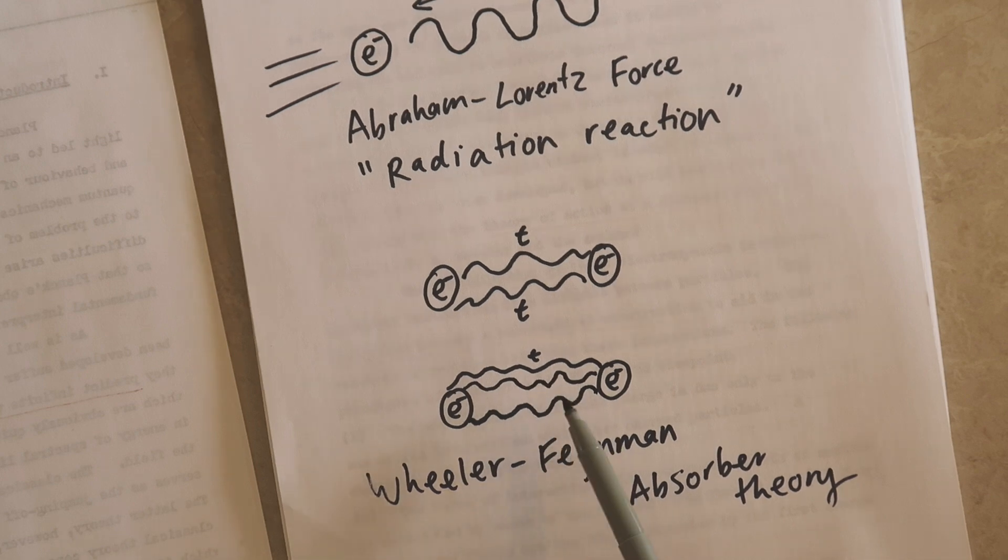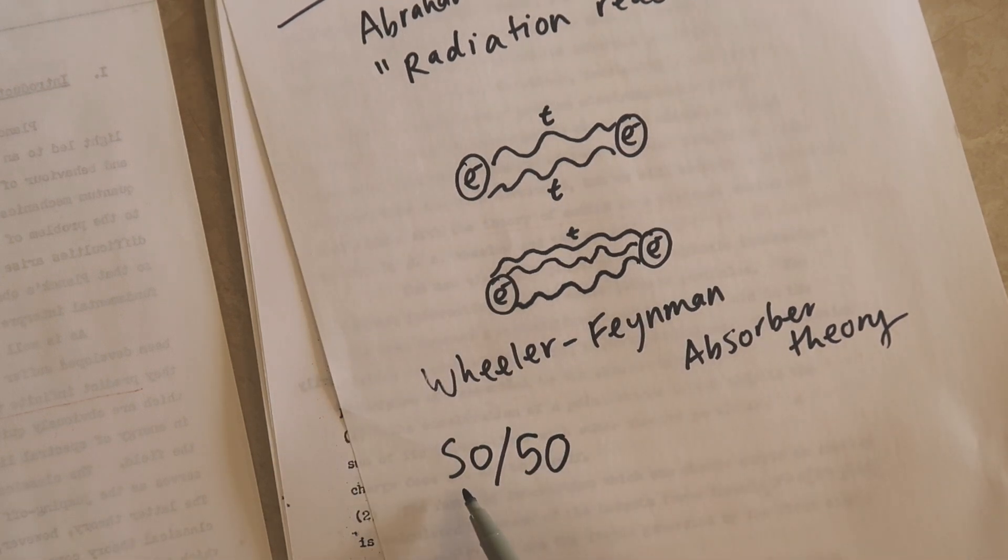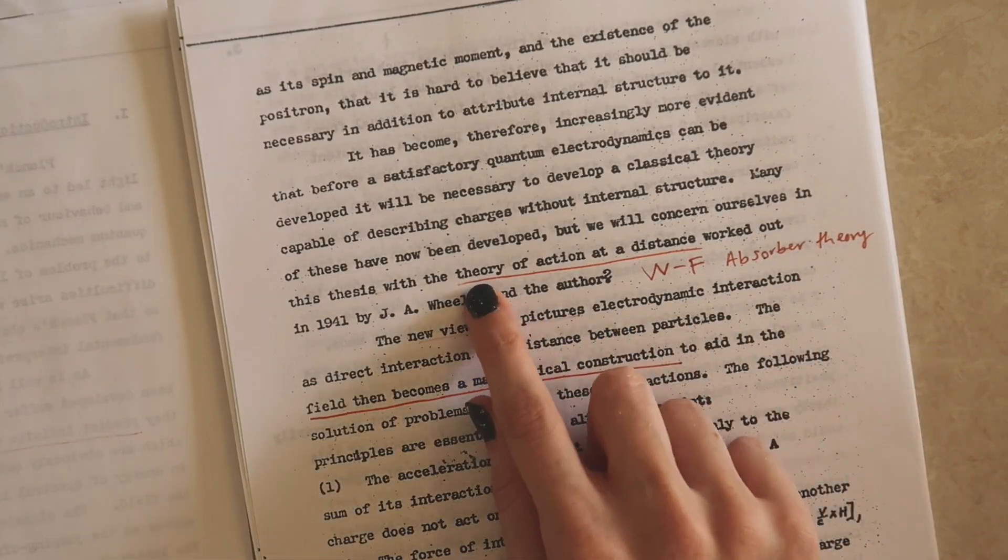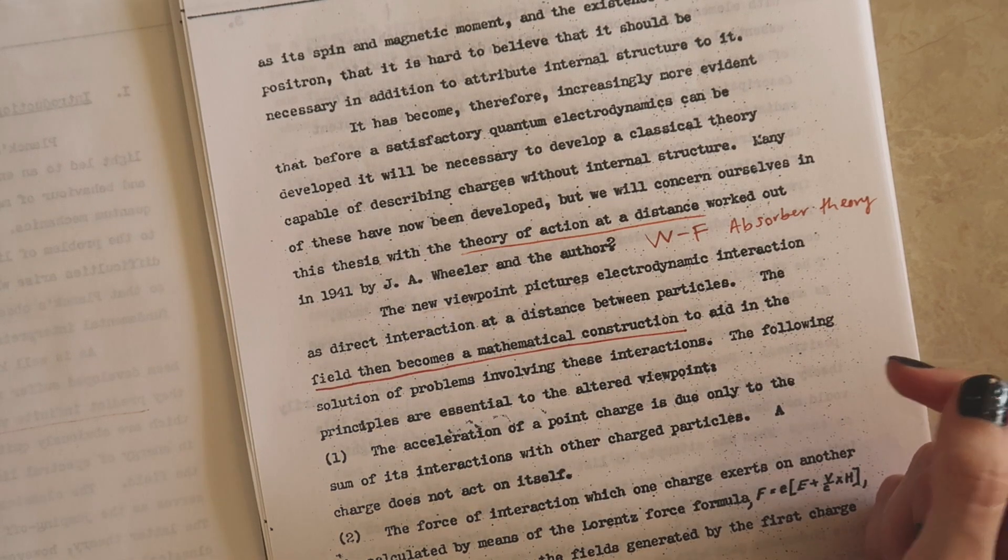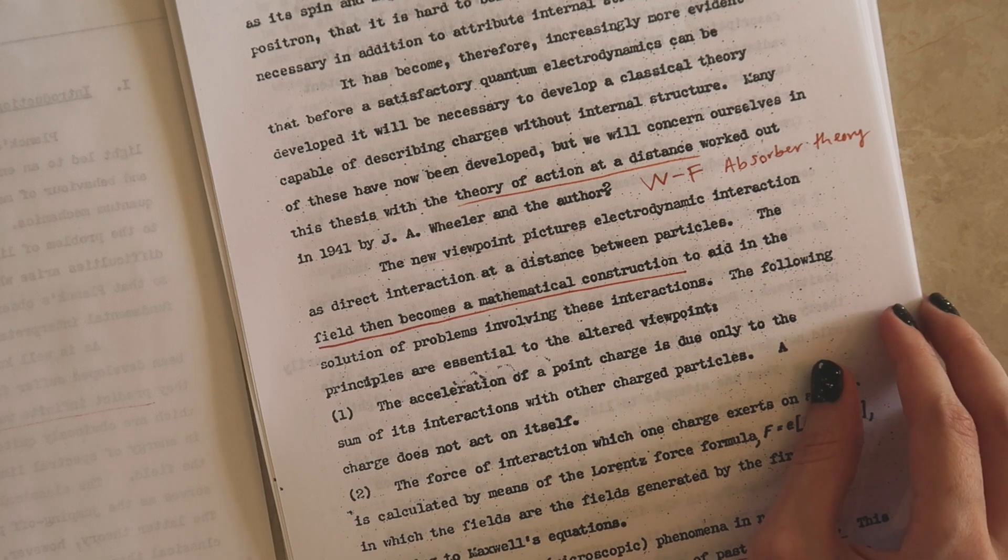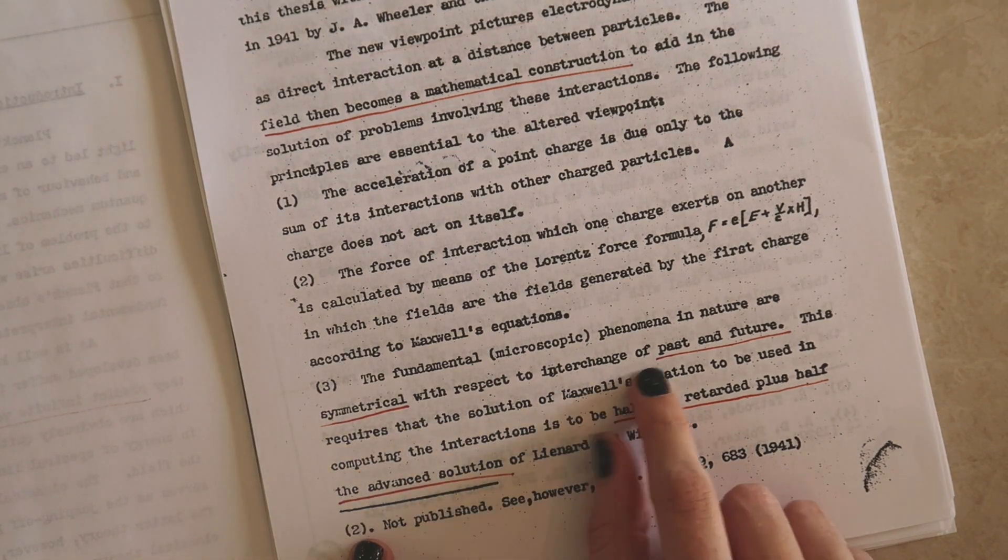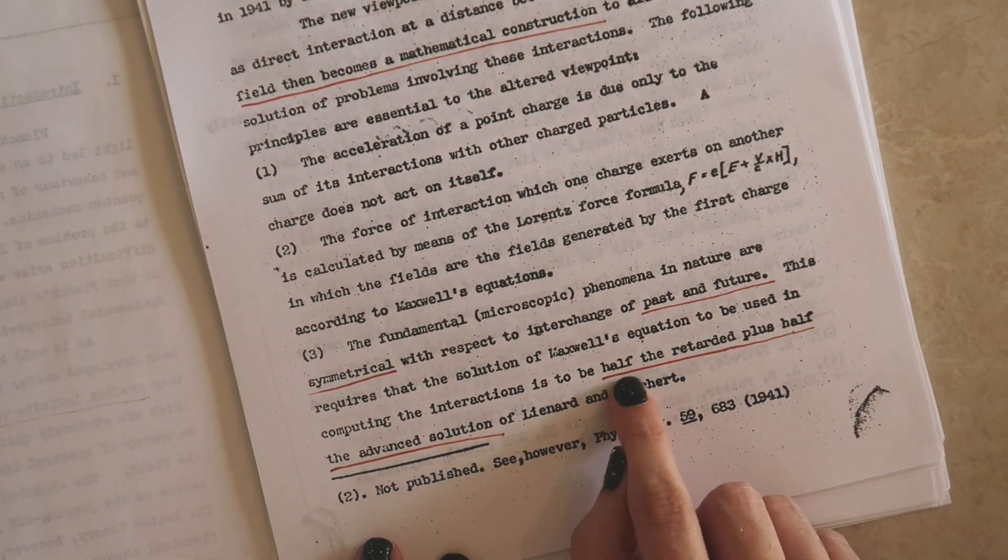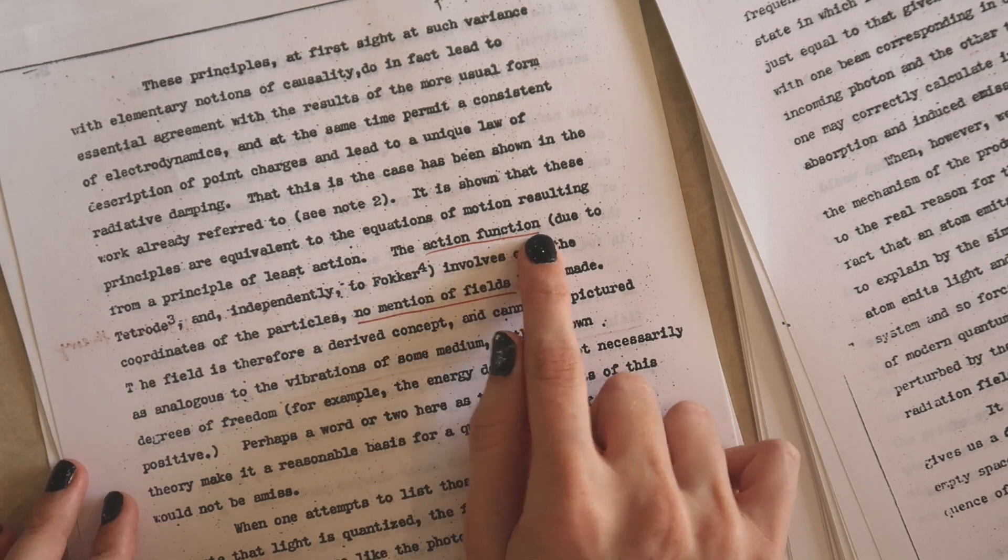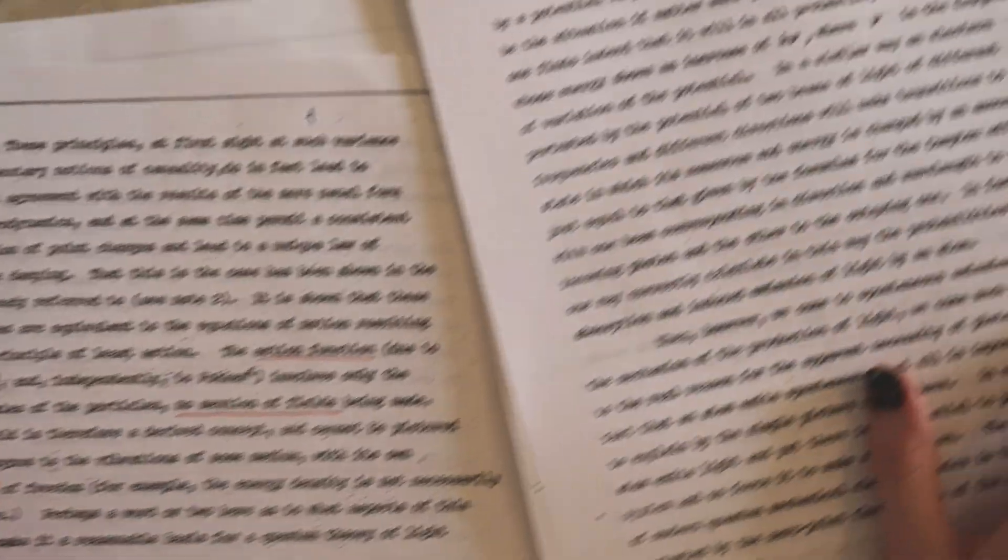Feynman went on to show that this can account for radiation reaction if you use a mixture of 50-50 advanced waves to the normal reflected waves. Feynman mentions that here in the introduction to his thesis that he's using this theory developed by John Wheeler and himself and that under this theory the field becomes nothing more than a mathematical construction that you can use to aid in some of the problem solving here. You can see down here that his theory does contain a symmetrical nature with respect to past and future and he's using half the retarded waves plus half the advanced solution. What he does in the next chapter is to develop an action function which involves only the coordinates of the particles with no mention of fields being made. So let's go and have a look at that next chapter.